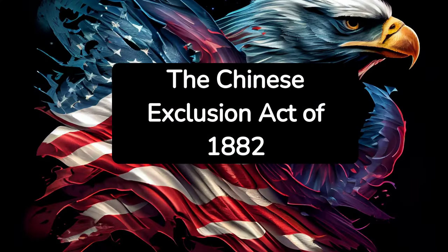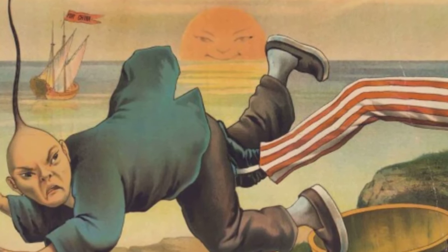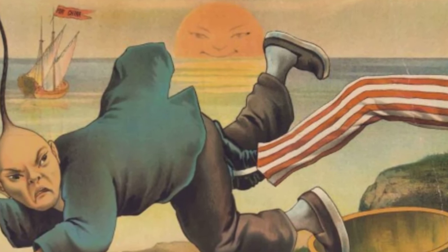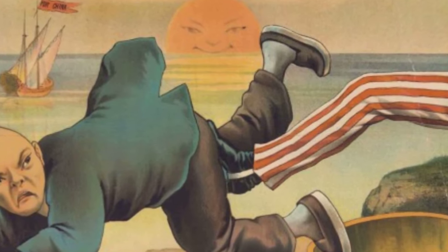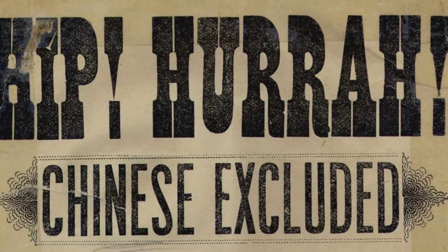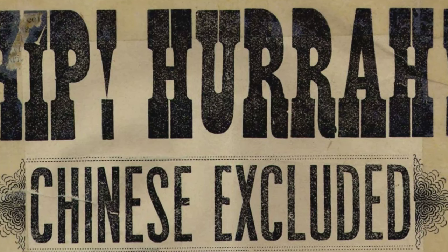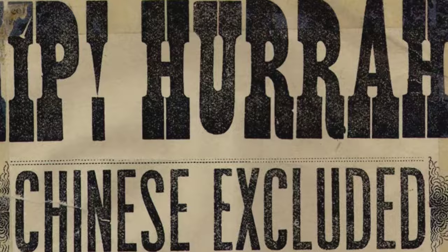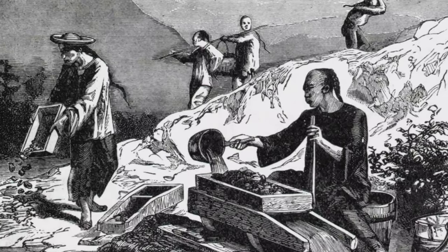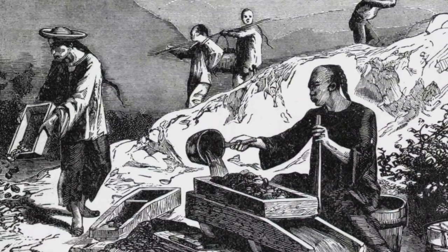3. The Chinese Exclusion Act of 1882. The Chinese Exclusion Act was the first significant law to restrict immigration based solely on ethnicity. It prohibited Chinese workers from entering the US and denied them citizenship, fostering an environment of racism and discrimination. This law remained in effect for over 60 years, reflecting deep-seated racial prejudice.